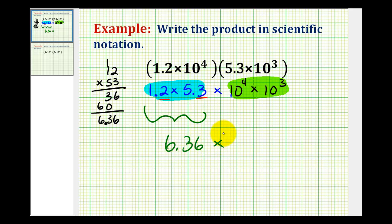And then to multiply 10 to the fourth times 10 to the third, if the bases are the same and we're multiplying, the rule is that we add our exponents. So this will be 10 to the seventh, and now we have the product written in scientific notation. And notice how this number here satisfies the condition of being greater than or equal to 1 and less than 10. So this is the correct form for our product.